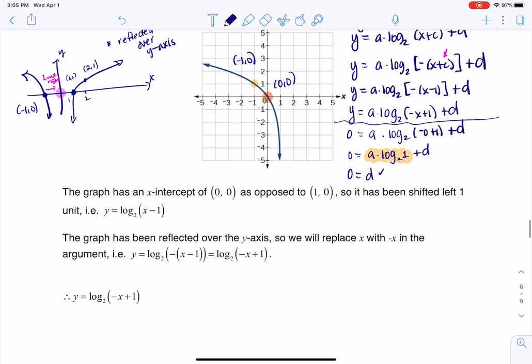So to just summarize where we are at this point, now I know that Y is equal to A times log base 2. And then we had in here negative x plus 1. And then since my D value was 0, that's what we just found. I'm going to leave that off.